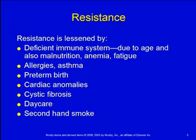Kids with lots of allergies or asthma have immune systems working against allergens, so they're just not as effective against infections. Preterm birth lowers resistance. Any cardiac anomalies — these kids do very poorly with even a minor respiratory illness. Cystic fibrosis is another factor. Daycare exposes them to more, so they get more. And secondhand smoke keeps their respiratory tract a little irritated, so it doesn't take much to trigger a far worse reaction.